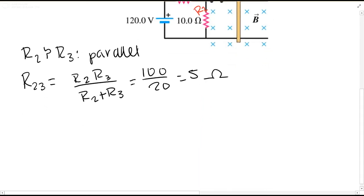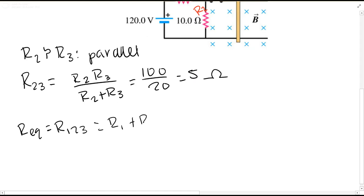Now to find our equivalent resistance, REQ equals R123, which equals R1 plus R23, which equals 25 plus 5 ohms that we just found. We have a 30-ohm equivalent resistor.